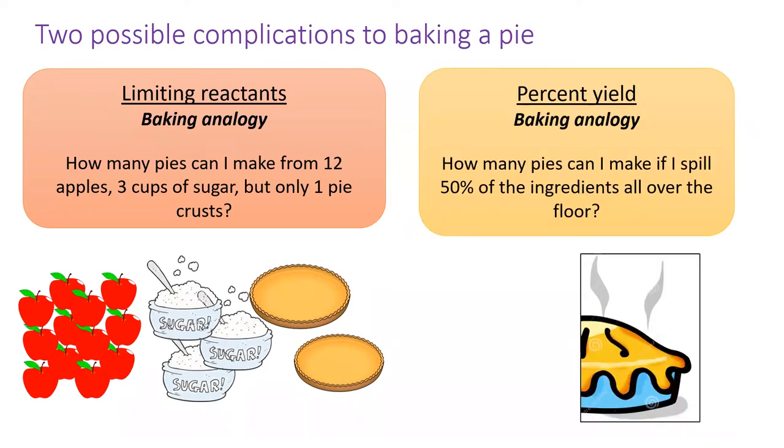Now imagine that while you're assembling the pie, your pet lion startles you and causes you to spill half the pie mix across the floor. This would decrease the number of pies you can make. In other words, it would decrease your percent yield.